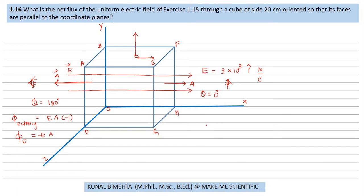So the flux leaving shall be equal to EA cos 0°, which is +1. Now if I find the total flux, which is entering and leaving some...